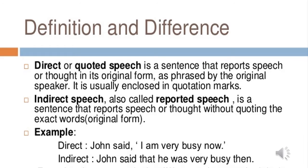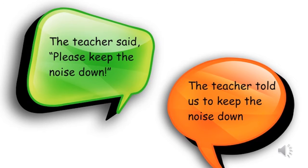For example, John said 'I am very busy now.' You can see 'I am very busy now' is in quotations, so it is direct speech. We will change it into indirect without changing the meaning but we will change its form: John said that he was very busy then. Here we can see one example of direct and indirect speech.